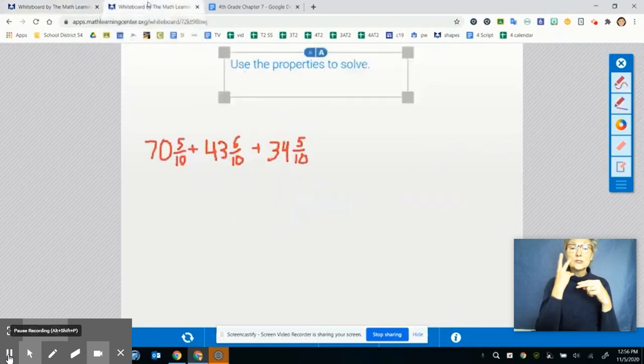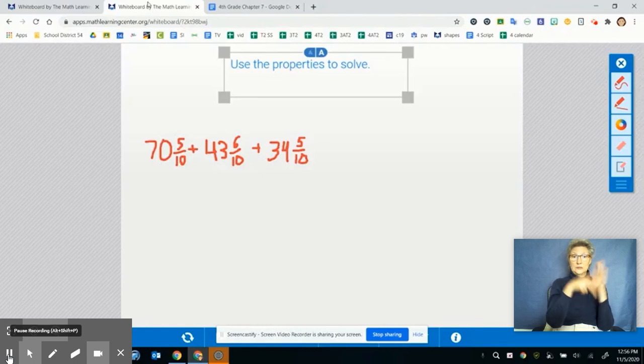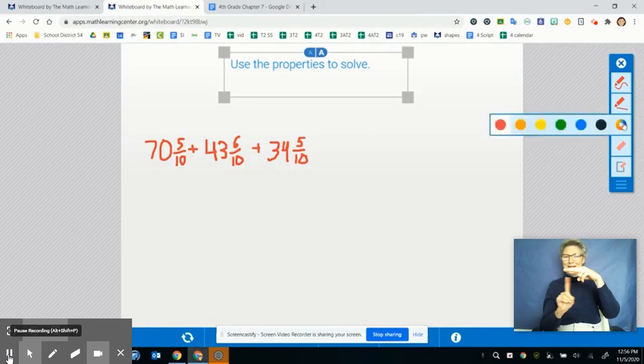Let's take a look at this problem. It says use the properties to solve. And again, we want to use mental math. And I'm going to ask you the question, why can we use mental math here? We can use mental math here because our denominators are all the same. So just like in the last problem, let's go through and let's add up our whole numbers first.